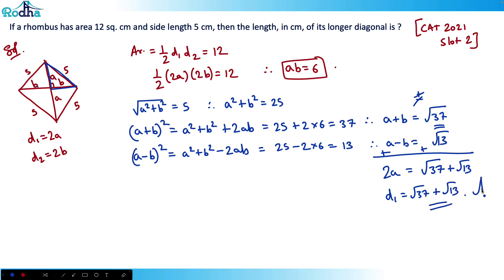Therefore d₁ is equal to root 37 plus root 13. That's the answer for this question. A simple question. If you subtract this, you'll be getting root 37 minus root 13, which is the other diagonal, the shorter one. That's why this is the longer one.